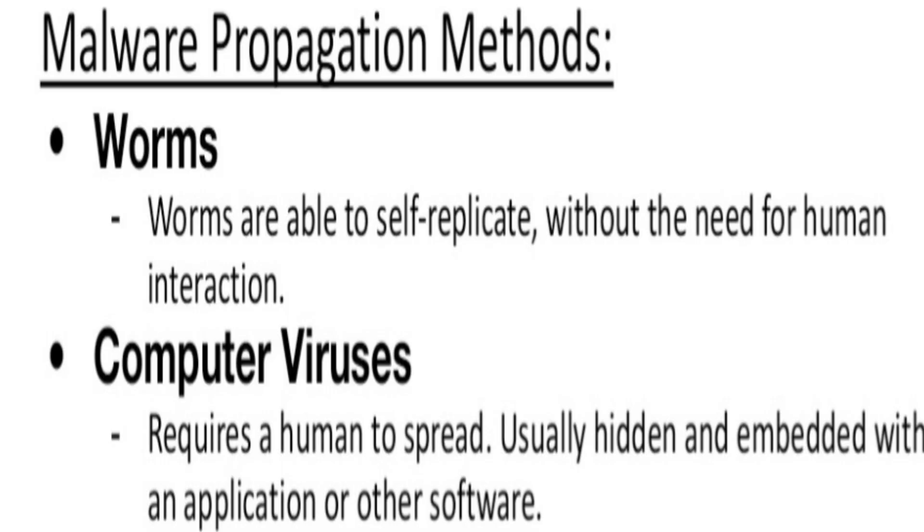First, under infectious malware, we have worms. Worms are able to self-replicate without the need for human interaction. They're very powerful. Basically, if you download an application with a worm in it and your phone is connected to Wi-Fi, the worm is able to hack into your Wi-Fi and then get into any device that connects to that Wi-Fi. That's why when I do my videos I make sure not to be connected to Wi-Fi.